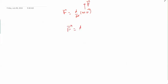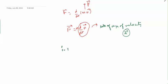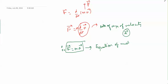Elaborating: F = d(mv)/dt, and since m is constant, F = m·(dv/dt). The rate of change of velocity is acceleration, so F = m·a. This is the equation of motion of the particle.